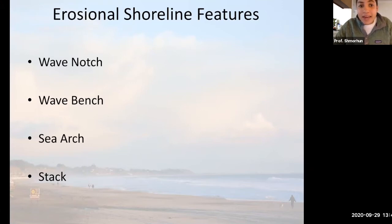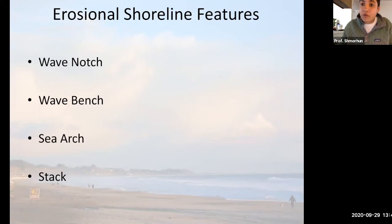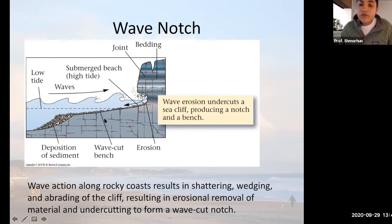These landforms occur in pairs. Wave notches come before wave benches — that's the first pair. Sea arches come before sea stacks — that's the second pair. Wave notches occur along rockier coasts.